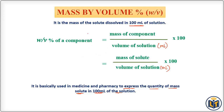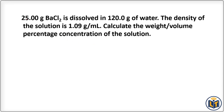The problem states that 25.00 grams of barium chloride (BaCl₂) is dissolved in 120.0 grams of water. Barium chloride is the solute and water is the solvent. The mass of each component is given. The density of the solution is 1.09 gram per ml.